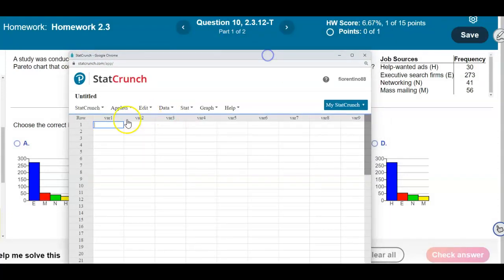When we open up StatCrunch, we're going to create the first column, and we're going to call that job sources, which is what we have over here, and then we have frequency. So help wanted ads represents H, executive search firms represents E, networking is N, capital N, and then mass mailing is M.